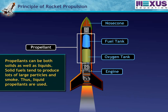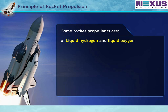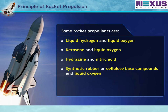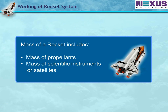Propellants can be both solids as well as liquids. Solid fuels tend to produce lots of large particles and smoke, thus liquid propellants are used. Some rocket propellants are: liquid hydrogen and liquid oxygen; kerosene and liquid oxygen; hydrazine and nitric acid; synthetic rubber or cellulose-based compounds with liquid oxygen; and polybutadiene and acrylic acid with an oxidizer such as aluminum perchlorate.